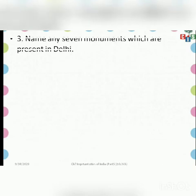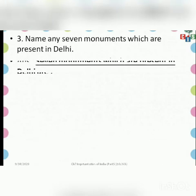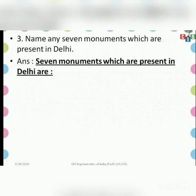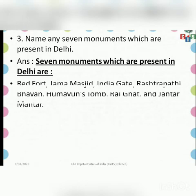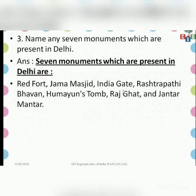The third short answer question is: name any seven monuments which are present in Delhi. The seven monuments present in Delhi are Red Fort, Jama Masjid, India Gate, Rashtrapati Bhavan, Humayun's Tomb, Rajghat, and Jantar Mantar.